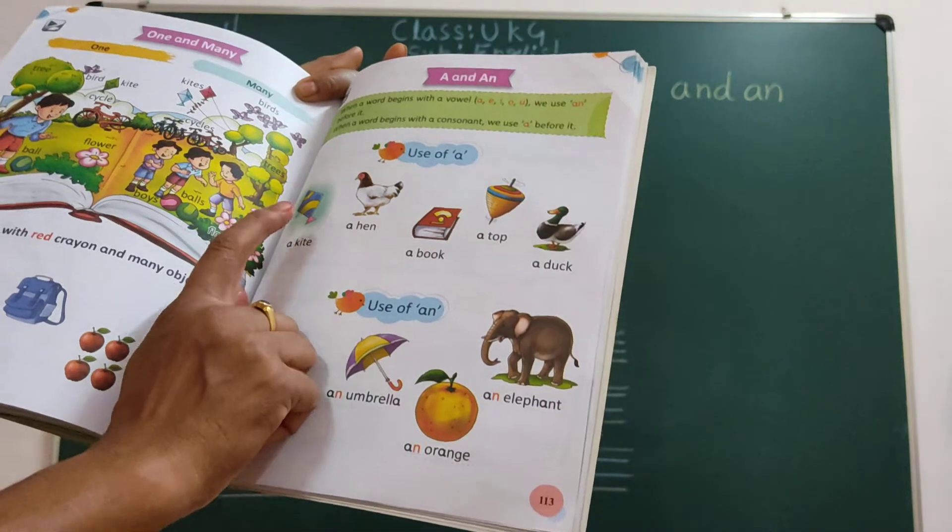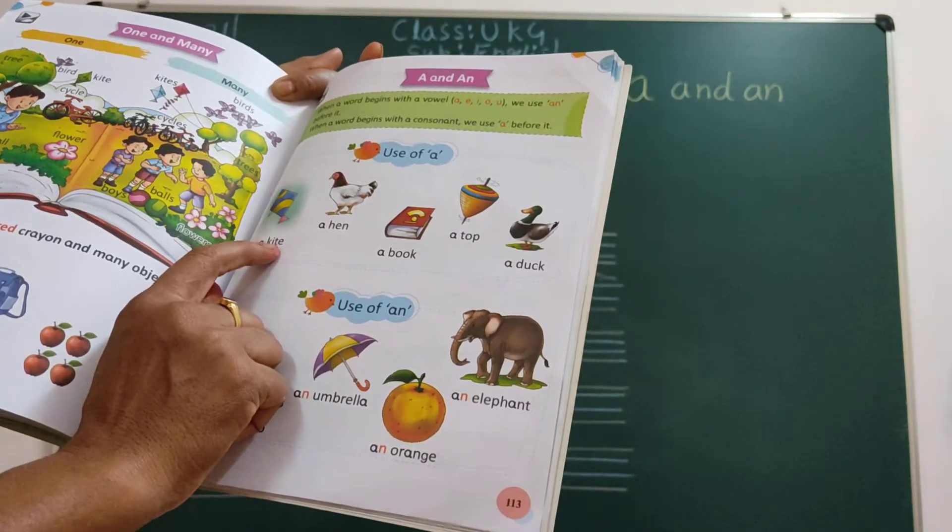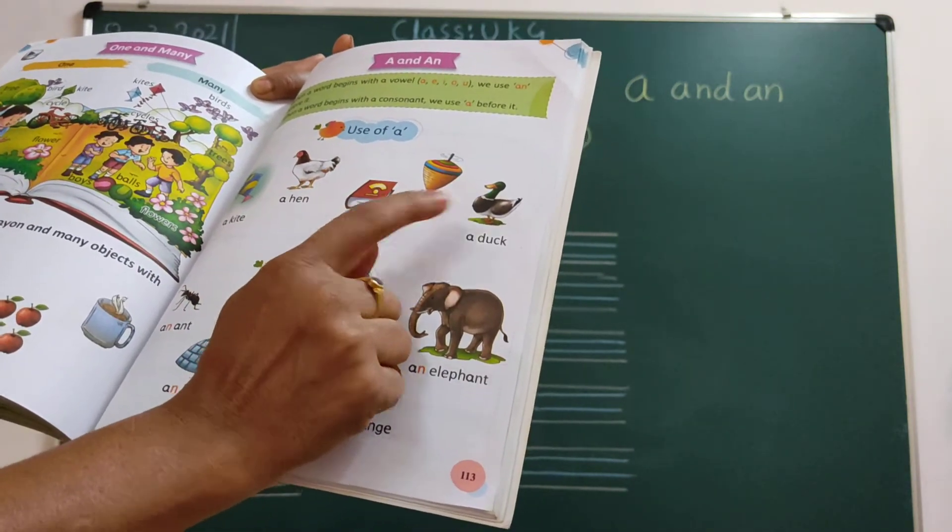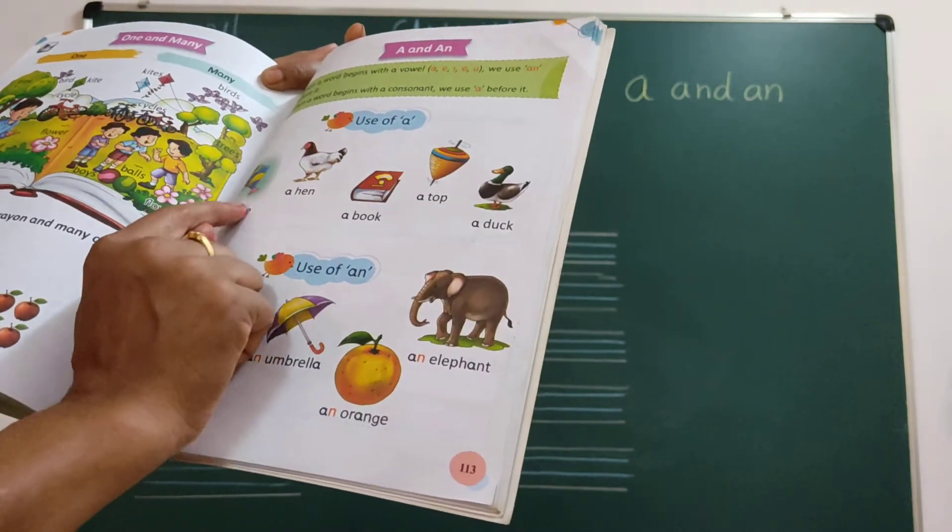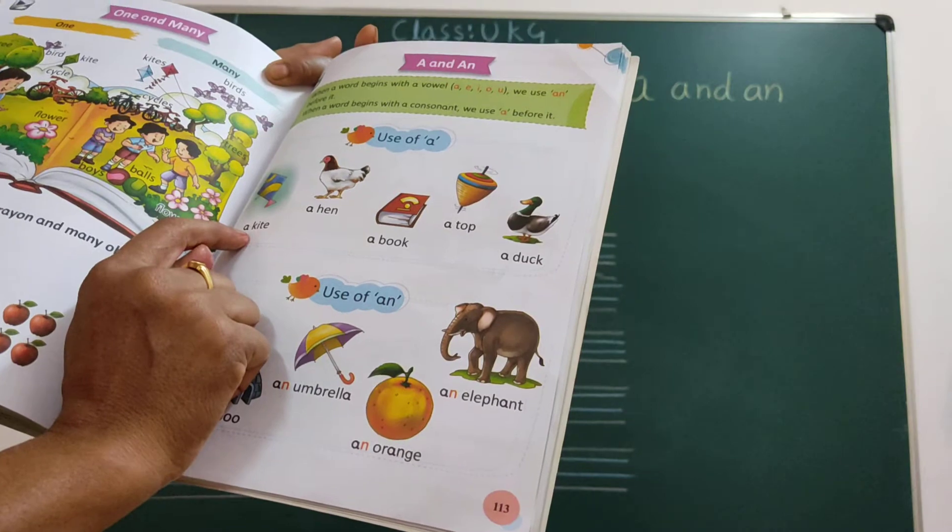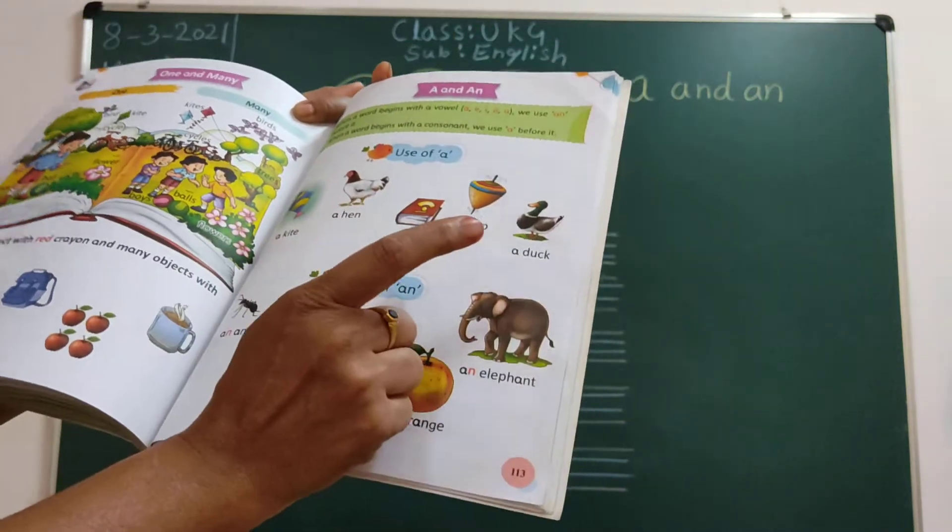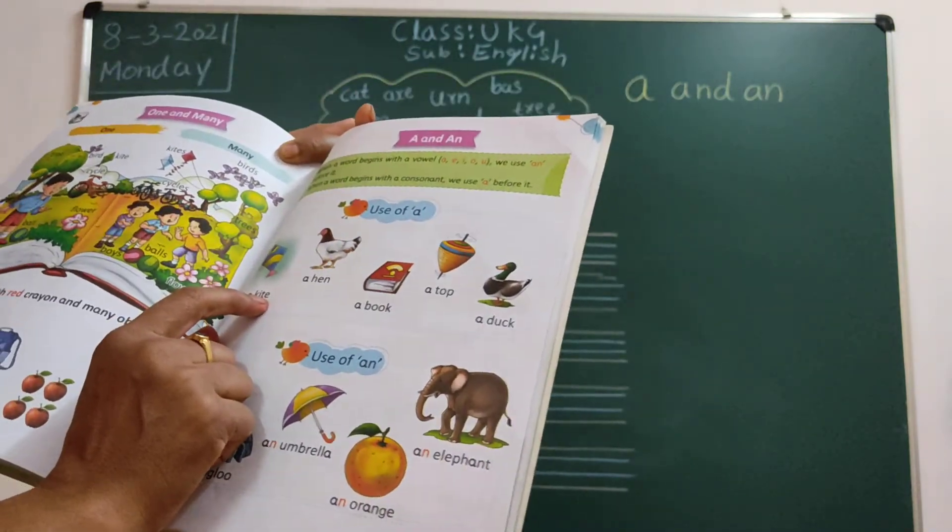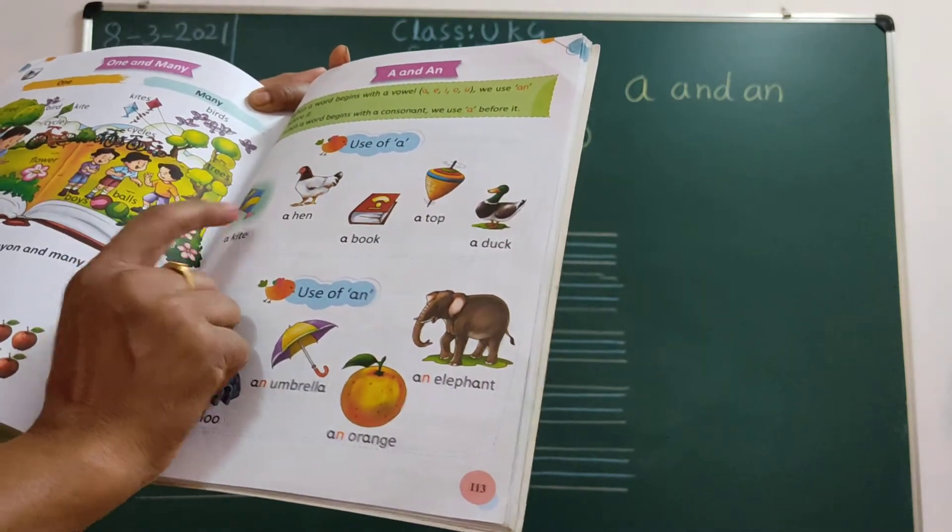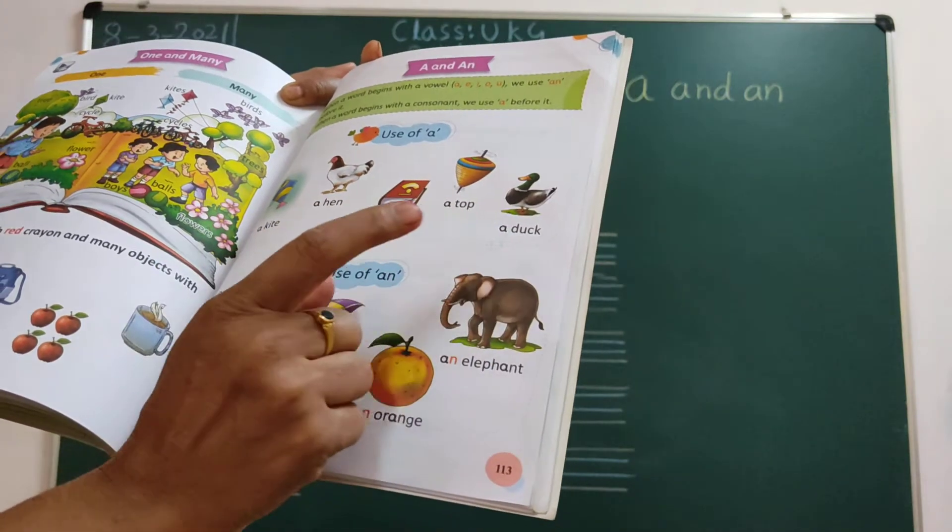Ok. What is this picture children? Kite. So how to call a kite, a hand, a book, a doll, a duck. So when we are using A children, when a word begins with a consonant, we use A before it. When a word begins with a consonant, first letter consonant, we use A before it.